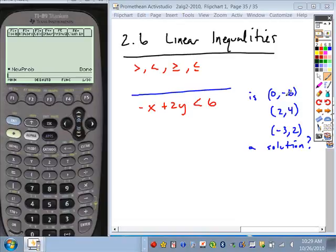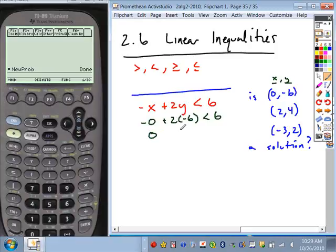So if we test the point (0, -6), you plug in a 0 for your x, plug in a -6 for y and you test the validity of this statement. So you have -0, 2 times -6 is -12. Is it true that 0 minus 12 is less than 6? Yeah. So this right here would be a solution.